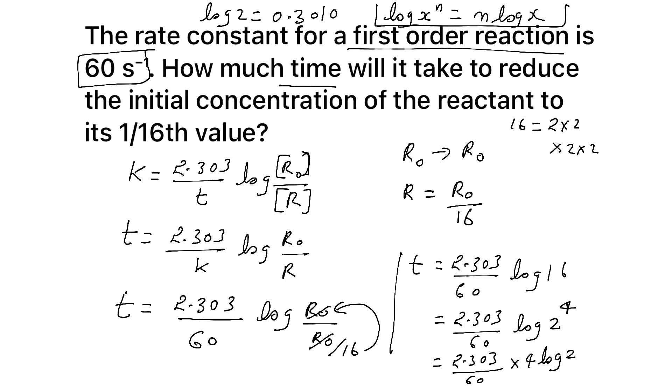Here, X is 2 and N is 4. So 4 log 2. Now, what is the value of log 2 that I already gave? 0.3010. Apply, substitute.